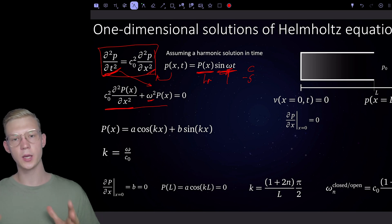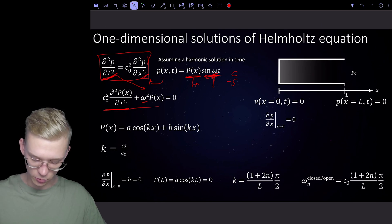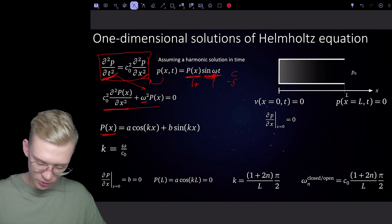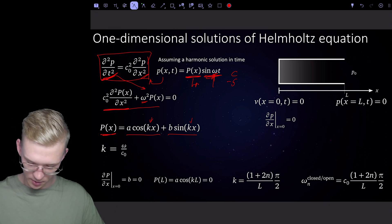Now we have to assume a function that will fit our boundary conditions. Because we're solving a one-dimensional solution and we know we have some oscillation, we propose that our pressure is simply a cos(kx) + b sin(kx), and we want to find out what that k is.